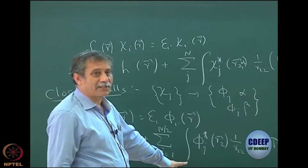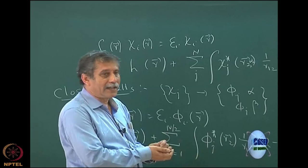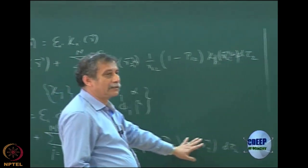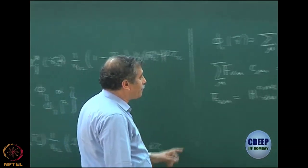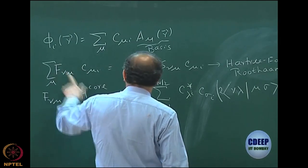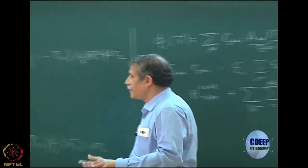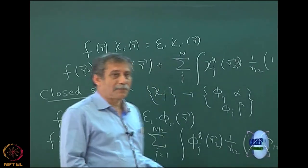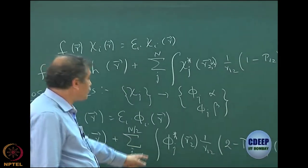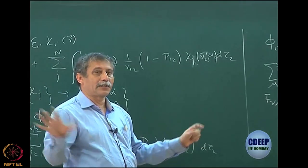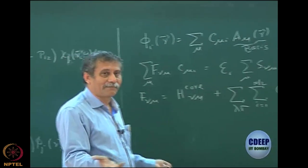You just have to look at this expression: instead of j, you have written i — that is all — and you are expanding one orbital in lambda and the other in sigma, so the coefficients come out. You can also write it incompletely, that is, just expand in terms of atomic orbitals, write f(r), and later take the nu-mu matrix elements. It is one and the same thing — you should be able to derive anything from anything.